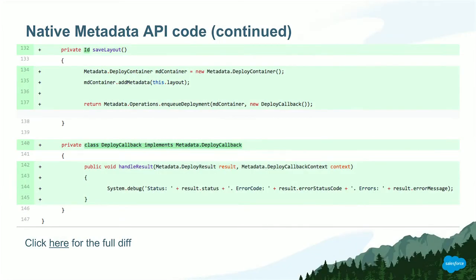The difference comes when we perform the save. Now we're always forced to do it asynchronously, which is a good thing because layout and other metadata operations can be long-running. We define our deploy callback — just like a JavaScript callback, it gets executed. You call the handleResult method on your interface, which gives you context and whether or not the deployment succeeded, so you can react accordingly and tell the user if there was a problem.